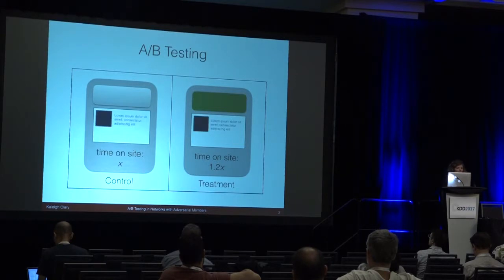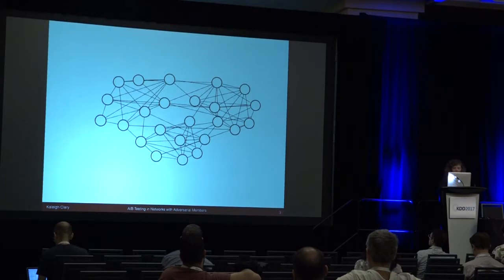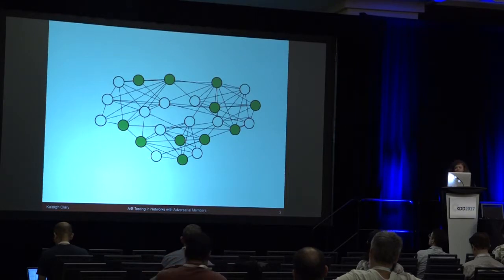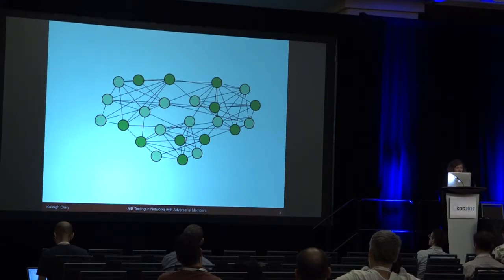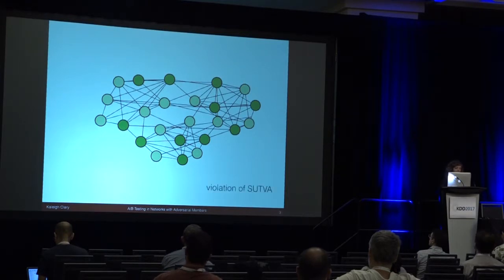But what happens if your website is actually a social network? Now our population is a network, and if we follow the same procedure and randomly assign people in the network to treatment, someone might say 'I really like this green banner' and talk to all their friends using this new app. Then their friends are using the app more also. So we have this spillover effect from the random assignment through the network, which we'd like to avoid because this is a violation of the stable unit treatment value assumption from the Rubin-Causal model.